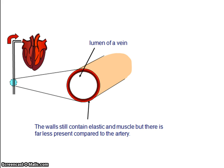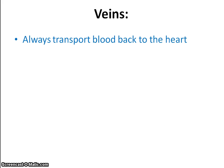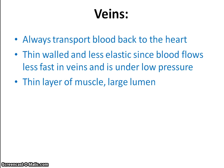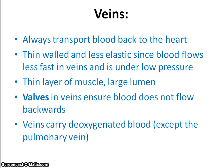In contrast, the vein is far less elastic and far less muscular. Blood comes back to the heart in the veins. The thin wall and less elastic structure means low pressure blood flow. But we do have valves in the veins to make sure blood doesn't flow in the wrong direction.